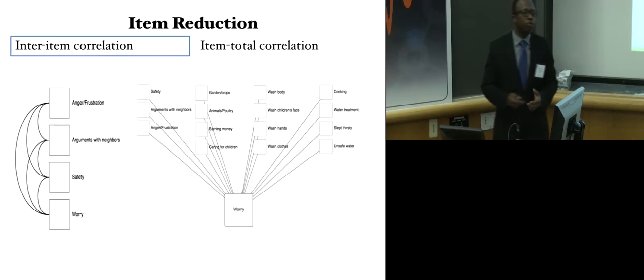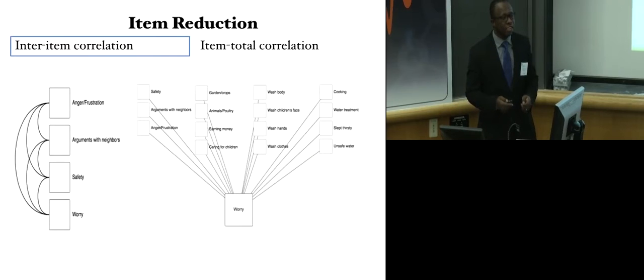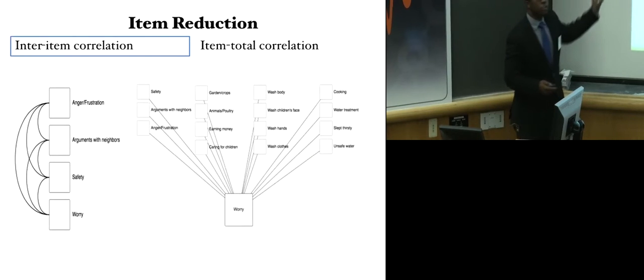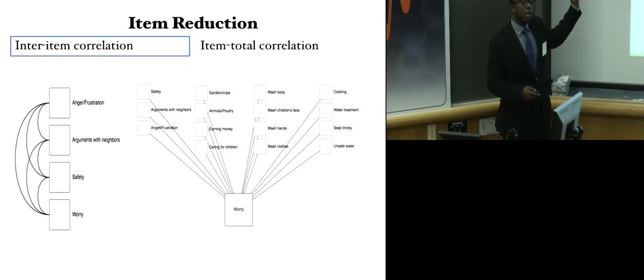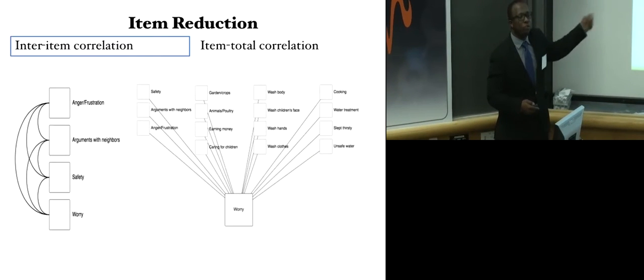But all 29 cannot be used, and so we have to look at item reduction. In doing that, we want to take a look at the relationship that exists between each of the items. So if there's an item that does not have a relationship with any of the items within the set, that item was dropped. Then we looked at item-total correlation or relationship.